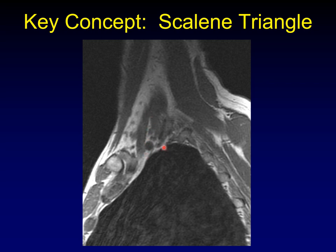When you begin your analysis of the brachial plexus, start here. Take an unenhanced T1-weighted sequence, find this triangle, and use it as your reference point. From here you can follow the nerves medially back to the cervical nerve roots or out laterally into the arm, and link your T1 and T2 sequences to find nerves on fat-suppressed T2 where they might otherwise be hiding. This is the most important takeaway from this lecture.